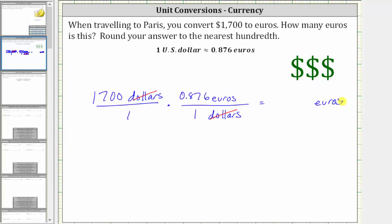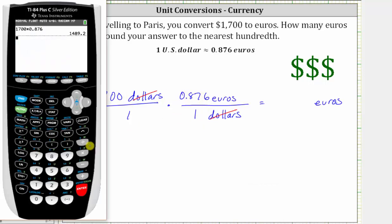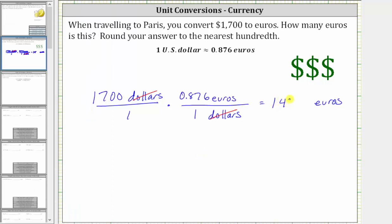To perform the conversion, we simply multiply. Since we have ones in the denominators, we just need to multiply 1,700 and 0.876. And notice how the product is 1,489.2, which means $1,700 is equal to 1,489.2 euros.